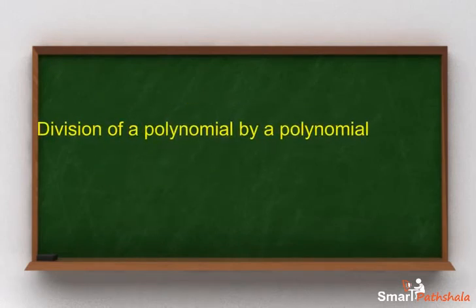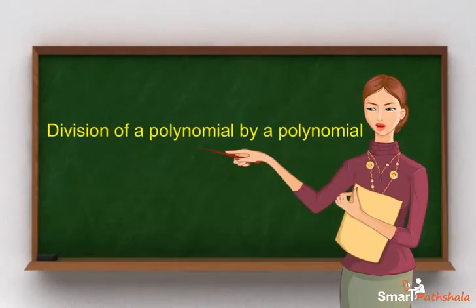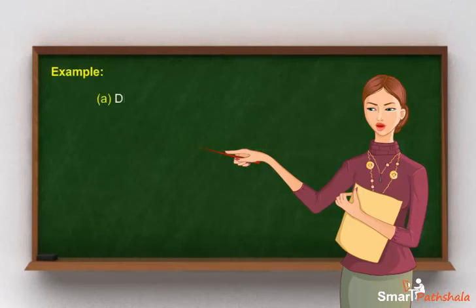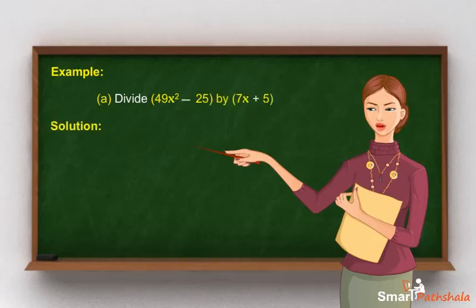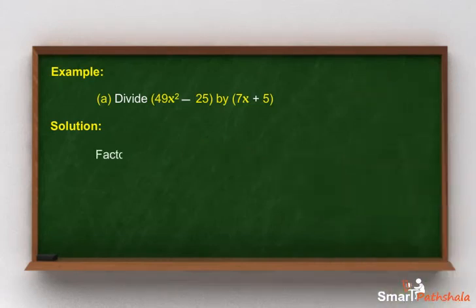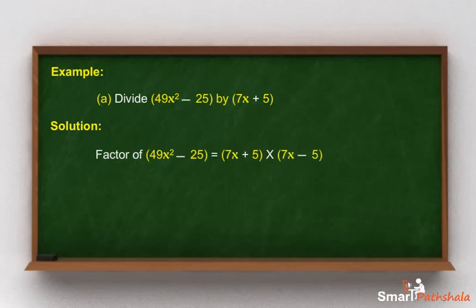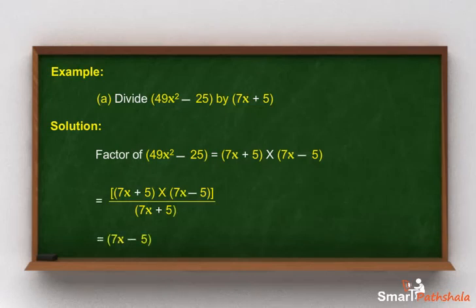Let's learn about the division of a polynomial by a polynomial. We will take factors of both the polynomials, divide them, and cancel out the common factors. Divide 49x squared minus 25 by 7x plus 5. Solution: we will find the factor of 49x squared minus 25, which equals (7x + 5)(7x − 5). Now divide: (7x + 5)(7x − 5) divided by (7x + 5) is equal to 7x minus 5.